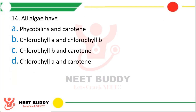Question 24. All algae have: Option A, Phycobilin and carotene; Option B, Chlorophyll A and Chlorophyll B; Option C, Chlorophyll B and carotene; or Option D, Chlorophyll A and carotene. The correct answer is Option D, Chlorophyll A and carotene is present in all algae.